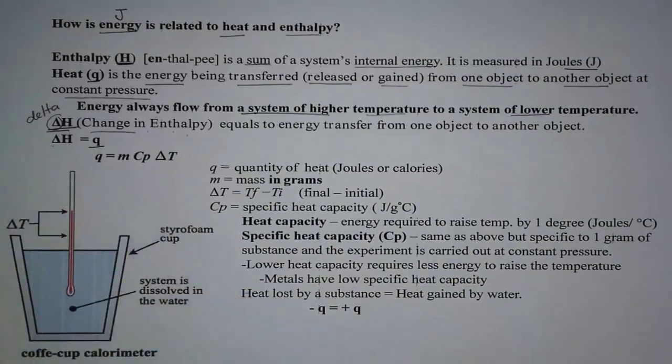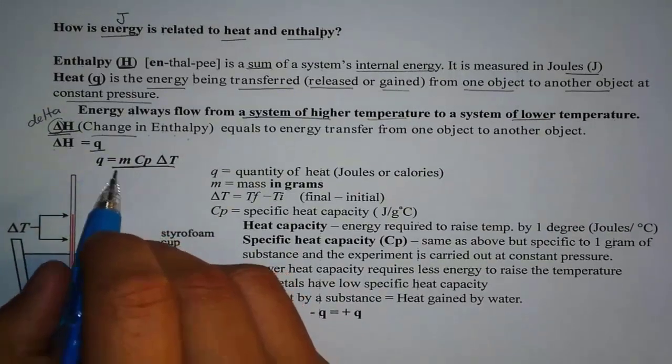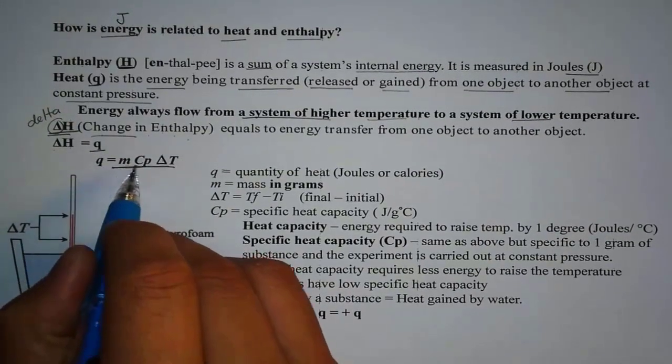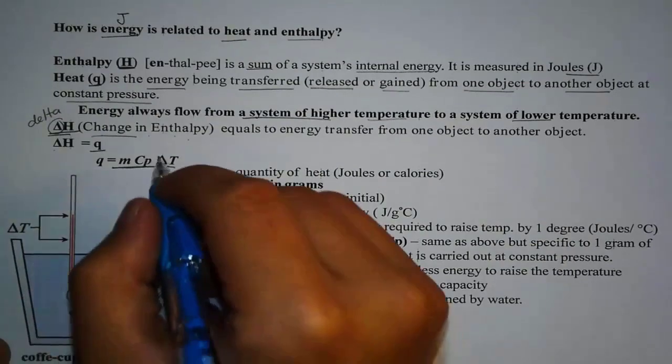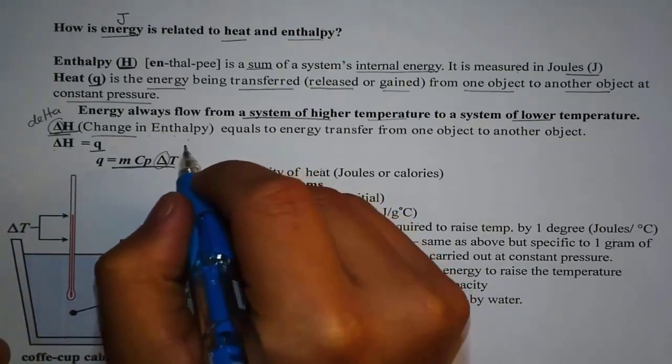Now, Q, which is heat, is equal to this equation. Q is equal to mass times specific heat times delta T. And again, delta T is the change, right?